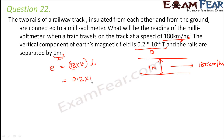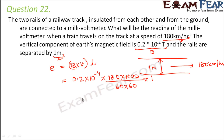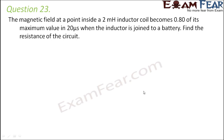Substituting values: B = 0.2 × 10⁻⁴ T, v = 180 km/h converted to m/s, and l = 1 m. The result is 10⁻³ volts, which is 1 millivolt.